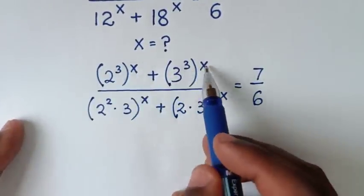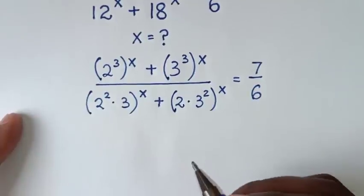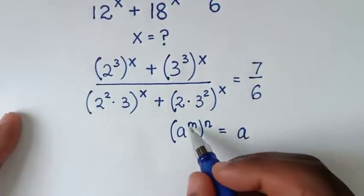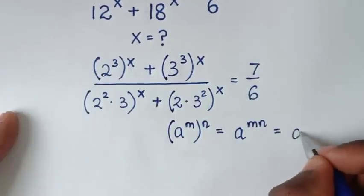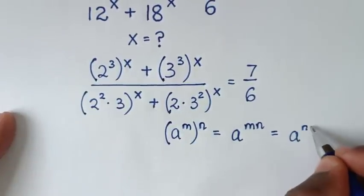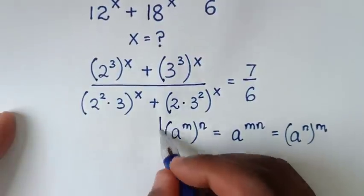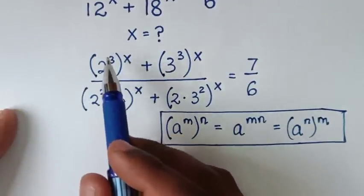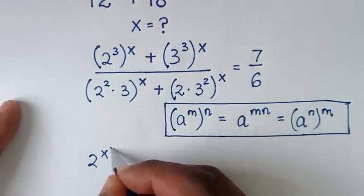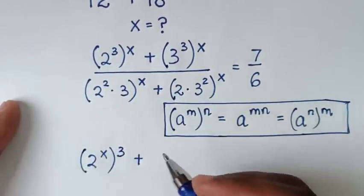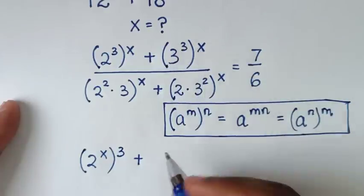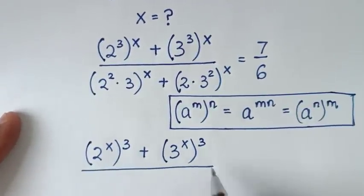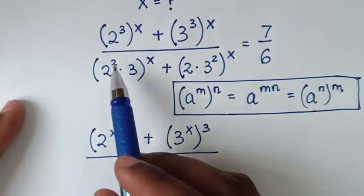We now apply the exponential rule: (a^m)^n = a^(mn). This allows us to exchange the powers. Taking the power of x inside and the power of 3 outside, (2³)^x becomes (2^x)³ and (3³)^x becomes (3^x)³. In the denominator, (2²·3)^x gives us 2^(2x) times 3^x.